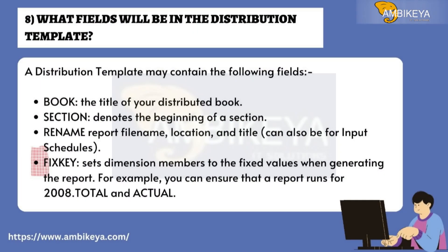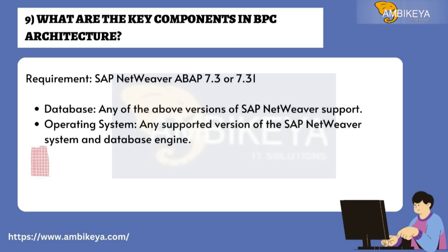Question 8: What fields will be in the distribution template? A distribution template may contain the following fields: Book — the title of your distributed book; Section — denotes the beginning of a section; Rename Report — file name, location, and title (can also be for input schedules); Fix Key Sets — sets dimension members to fixed values when generating the report, for example ensuring a report runs for 2008.Total and Actual.